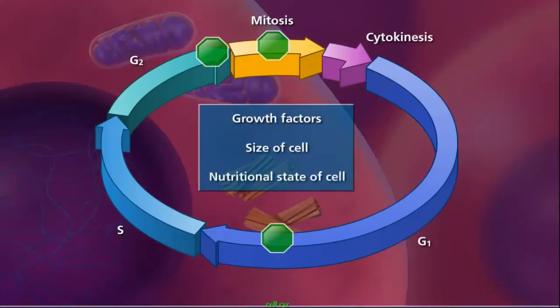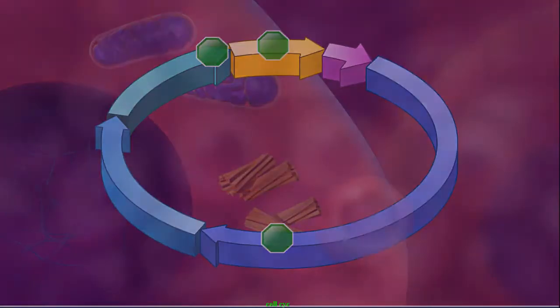Growth factors, the size of the cell, and the nutritional state of the cell are all contributing factors in cell cycle regulation, ensuring that only certain cells divide at appropriate times. Once all the checkpoints in interphase are cleared, mitosis can occur.